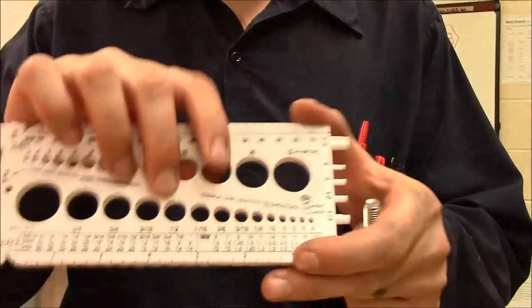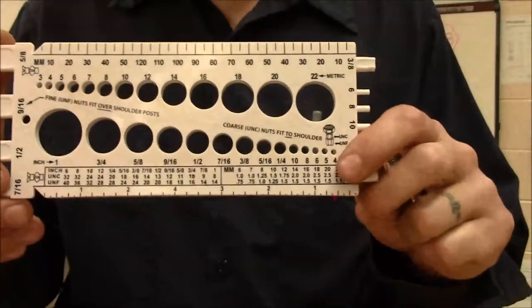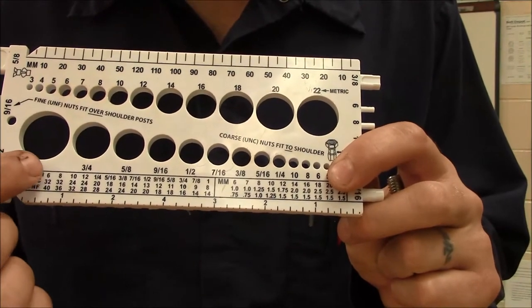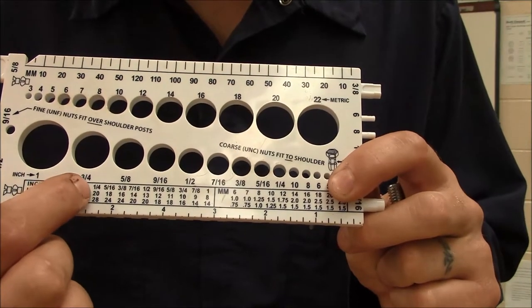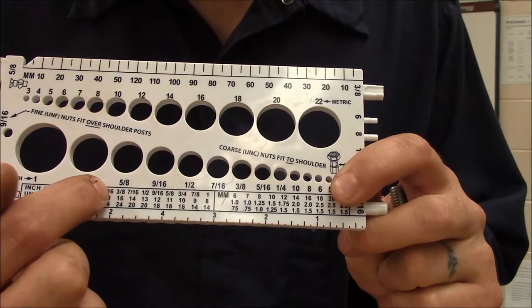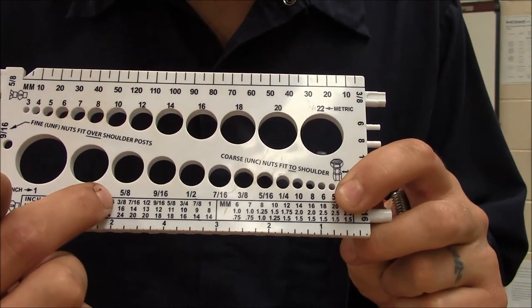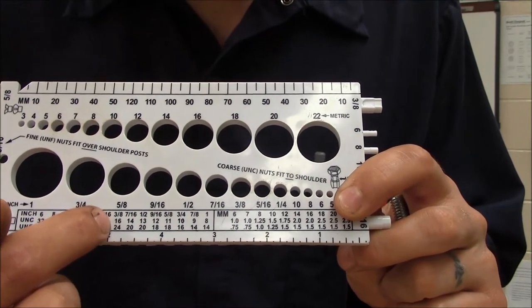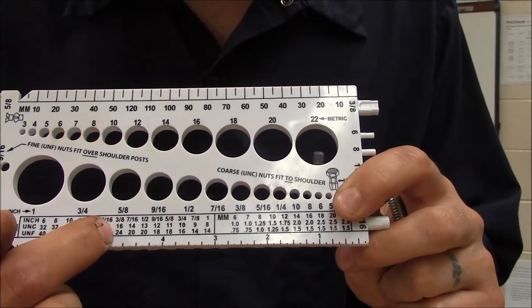So to figure that out, I get my bolt gauge back out. And if I look across the bottom of the scale here, and I find a 3/8 bolt, there are two possible sizes for 3/8, 16 threads per inch, and 24 threads per inch.